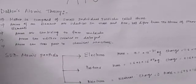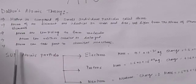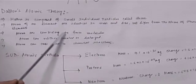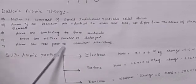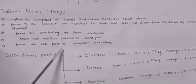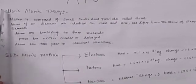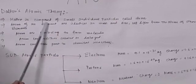Atoms can neither be created nor destroyed. And last, atoms can take part in chemical reactions. These are all the postulates of Dalton's atomic theory. There is one drawback of this theory.